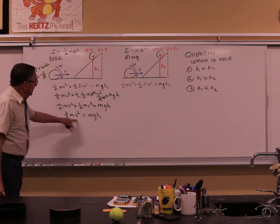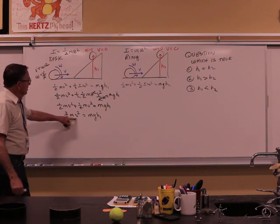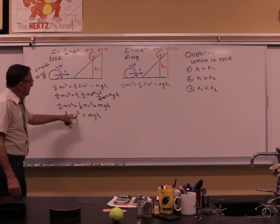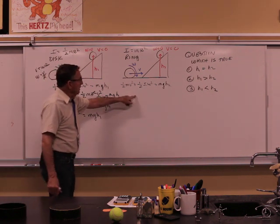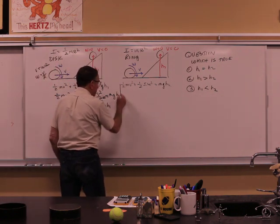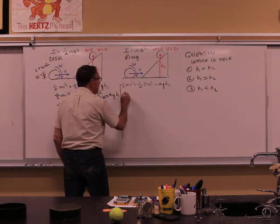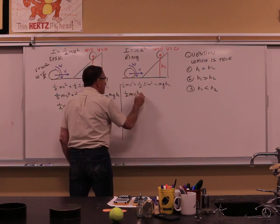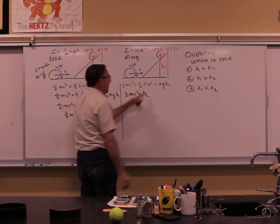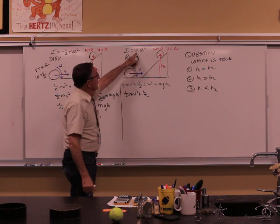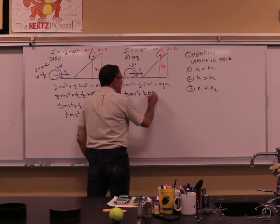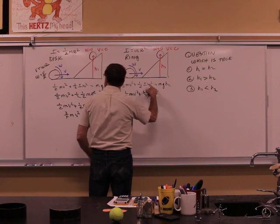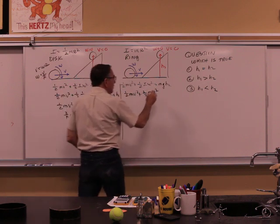There's an equation for a height based on v. On this one same thing. This is one half mv squared. This is one half I, now for a ring, mr squared. And then omega is v over r, v squared over r squared equals to mgh2.